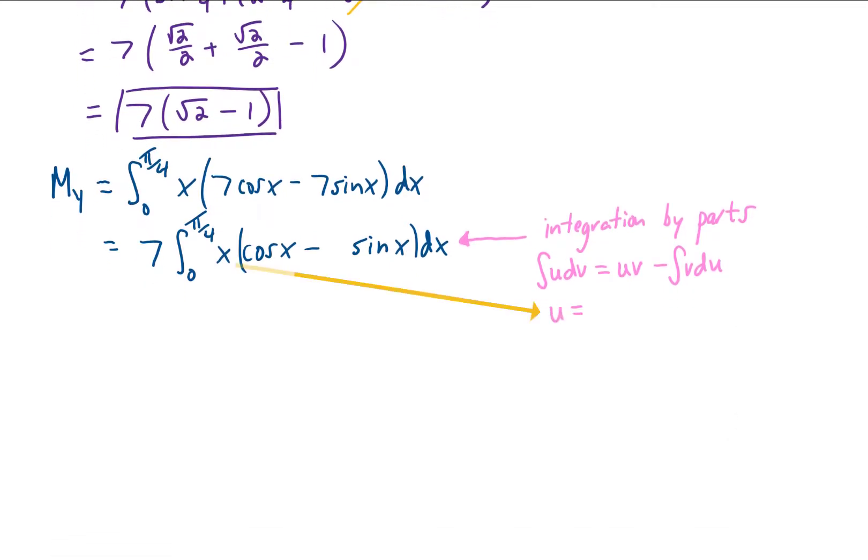And typically when we're integrating by parts, we want to choose a u that will simplify with differentiation. In this example, our u can be chosen as x, and that does simplify when we take a derivative. In this integral, we also have to choose the dv. Well, dv is just going to be everything else. And everything else in this integral is cosine of x minus sine of x dx.